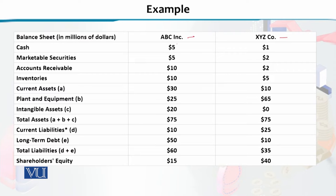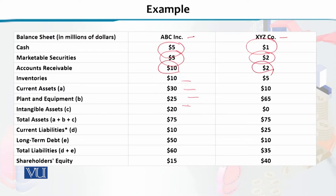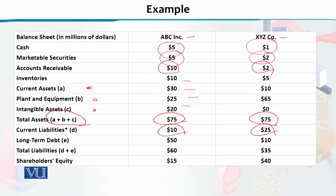In this example, ABC Incorporation has $5 million cash and $5 million in marketable securities, while XYZ has $2 million in marketable securities and $1 million cash. ABC has $10 million in accounts receivable, whereas XYZ has $2 million in accounts receivable. We also account for inventories, plant and equipment, and intangible assets. Adding all these gives total assets of $75 million for both ABC and XYZ.